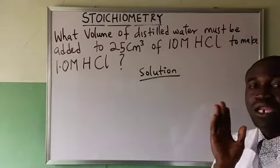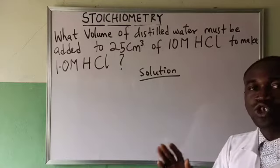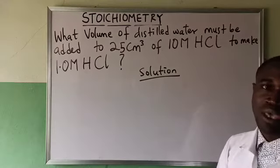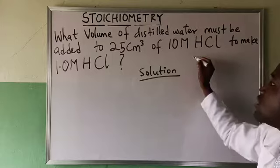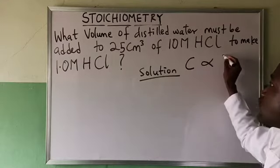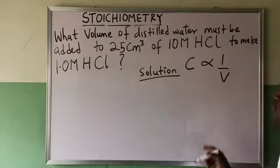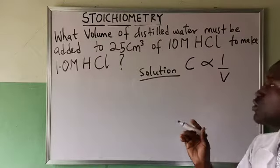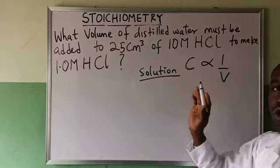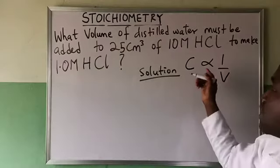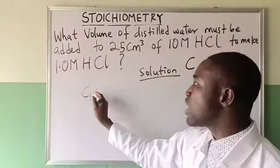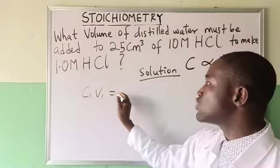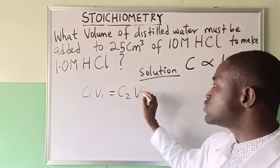And that is where the principle of dilution law came in which says that concentration is inversely proportional to volume. Once the concentration is high the volume will be small; when the volume is high, concentration will be low. From here we have that C1V1 is equal to C2V2.